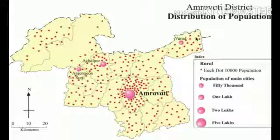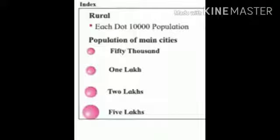To show distribution through the dot method, the value of the dot has to be determined. To do that, the lowest and the highest value of a variable in a region are taken into consideration. Accordingly, the number of dots are determined. Also, we need to consider the size of the dot, the density of the variable, and the scale of the map.